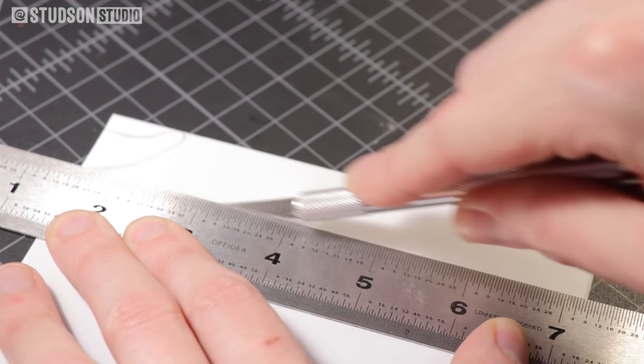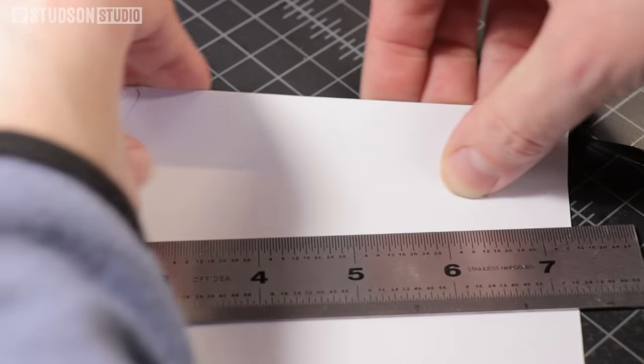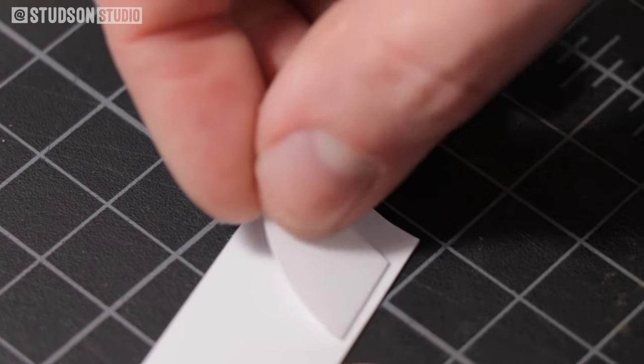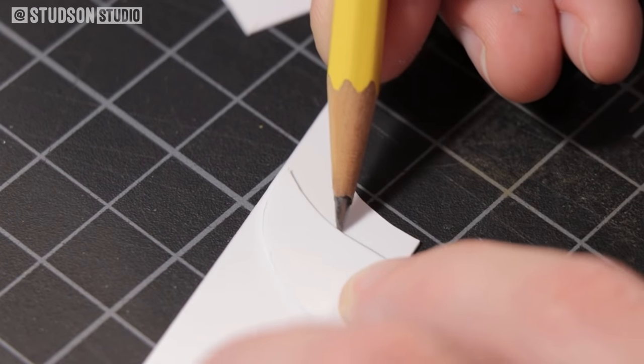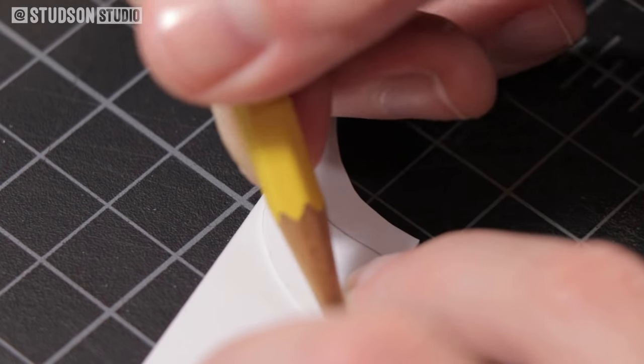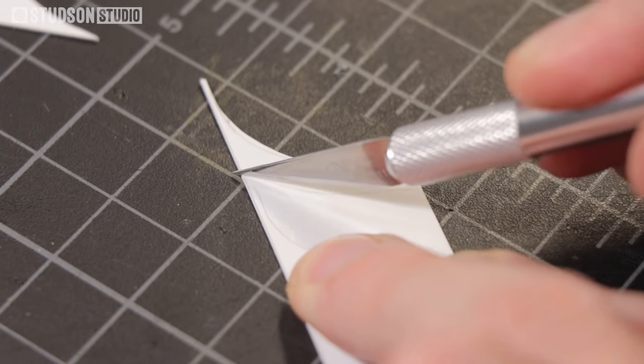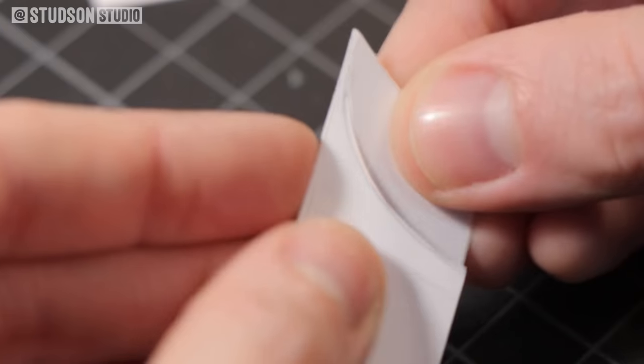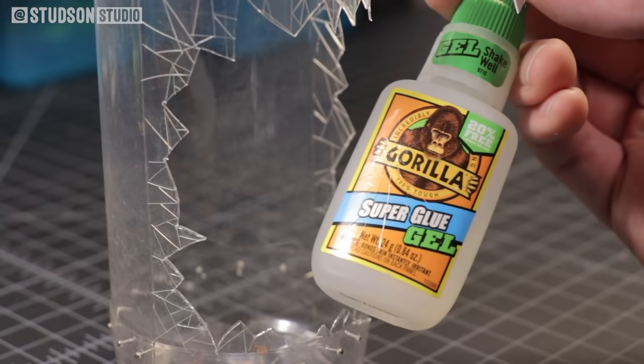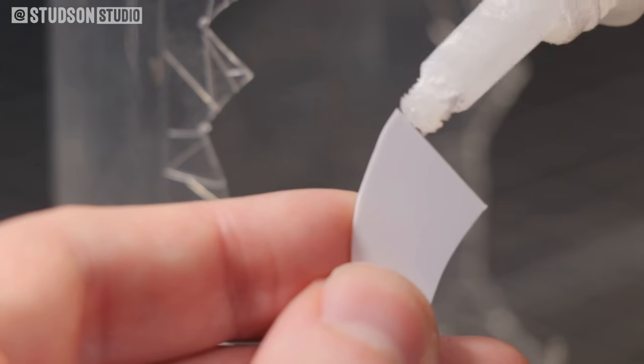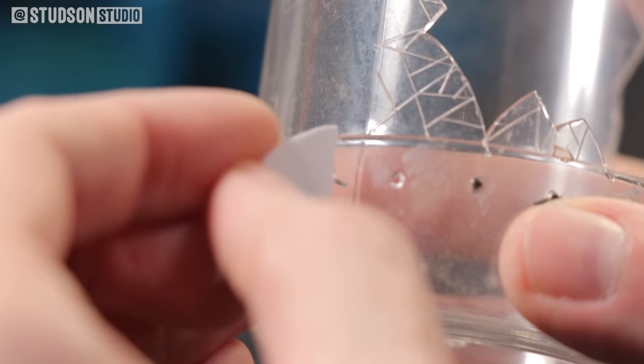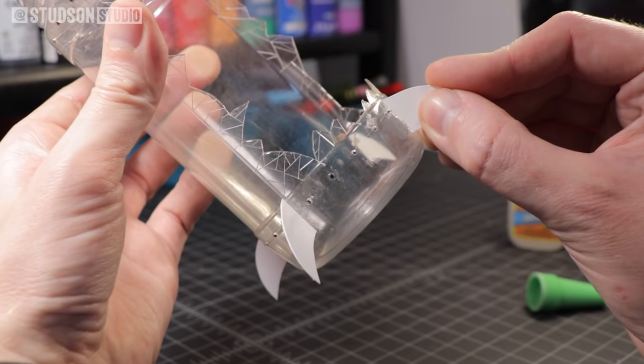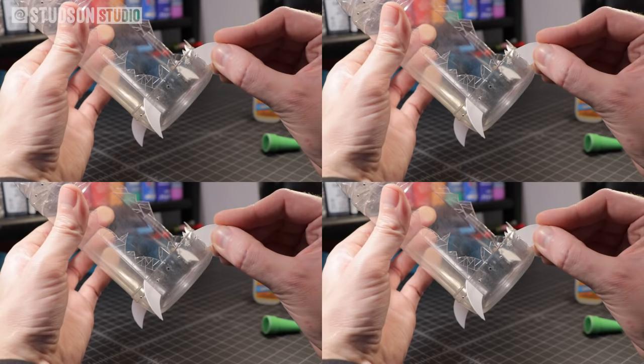Next I'm using more pla plate to trim out the four fins for the base of the rocket. Using this template I free-handed here, I took a pencil and traced out the remaining three fins. All it takes is a gentle caress of the blade and the fins should just snap out pretty easily. For all four fins.